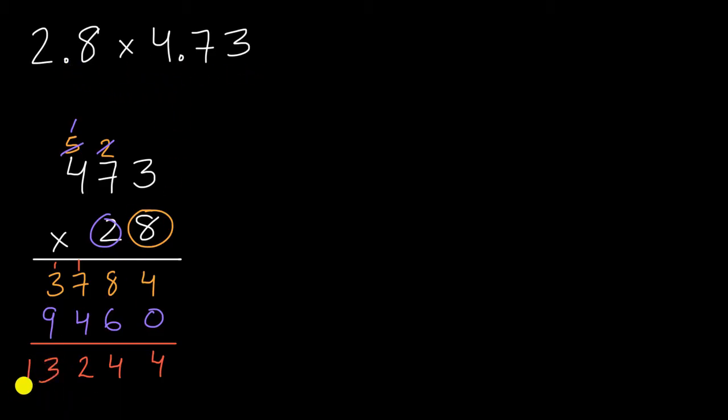So we know that the final answer has the digits one, three, two, four, four in that order. One, three, two, four, four. So now we have to think about where would we put a decimal for this to be a reasonable answer.